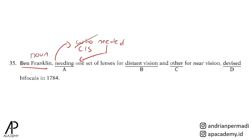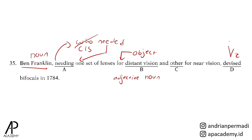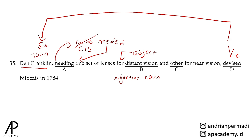Pilihan B, distant vision. Vision adalah noun, lalu distant adalah adjective. Hal ini sudah masuk pada susunan yang benar dari pola word order untuk noun phrase. Distant vision tersebut sebagai noun phrase berfungsi sebagai object of preposition atau objek untuk for. Devise adalah verb 2, di mana subjeknya adalah Ben Franklin. Oleh karena itu devise masih benar.